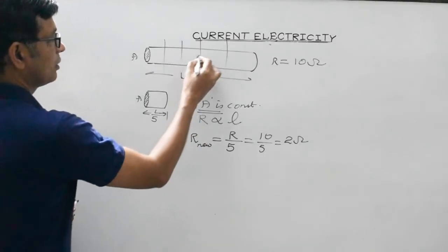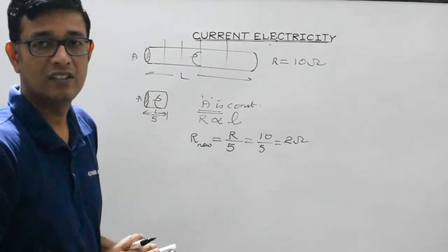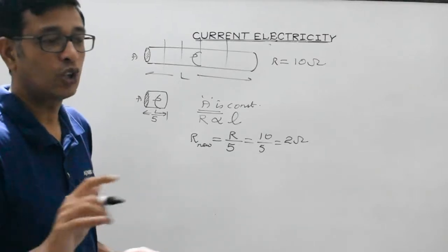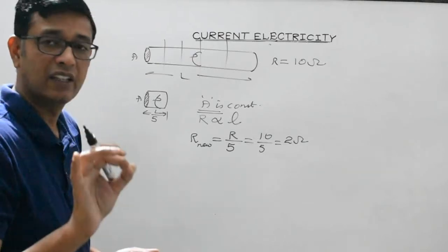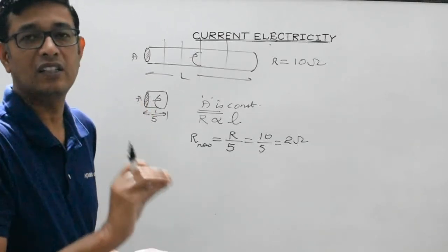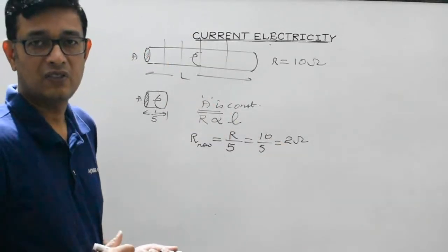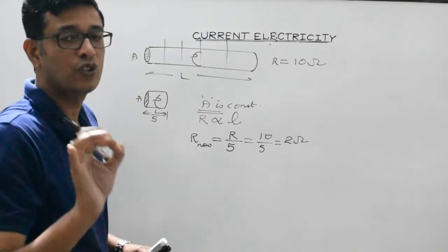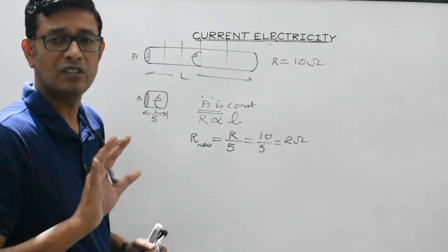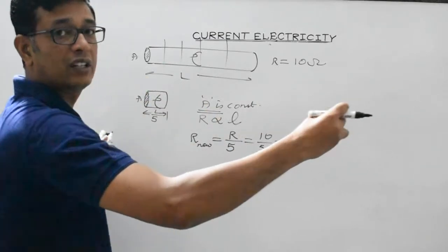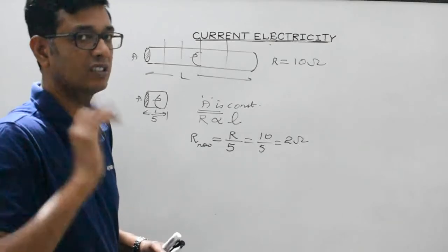What about the resistivity of each part? Resistivity ρ depends only on the nature of the conductor and physical conditions like temperature — it is independent of the dimensions of the conductor. Whether the wire is cut into 10 or 100 equal parts, each part has the same resistivity as the original, because it is made of the same material.